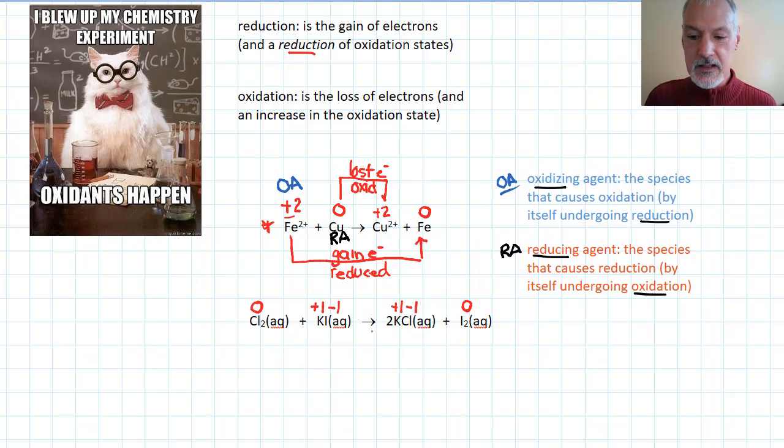I usually begin by identifying what species has been reduced, whose oxidation state has become smaller. And I can see, very quickly, that indicates reduction. And if that has been reduced, or undergone reduction, the species that caused it was this species. So, this must be my reducing agent.